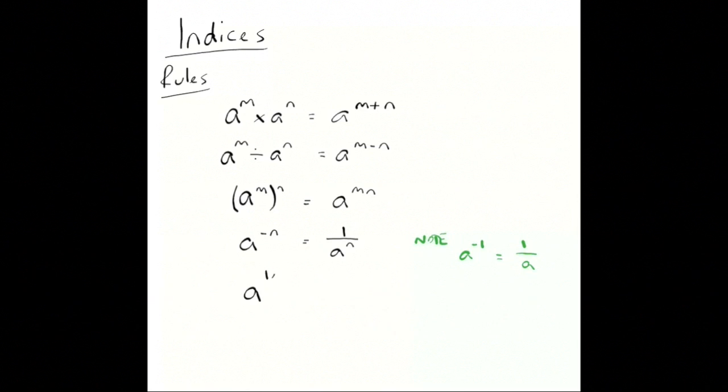We've also got fractional powers. So, a to the one over n is the nth root of a. We've got another note here. a to the half is the square root of a. a to the third would be a cube root.